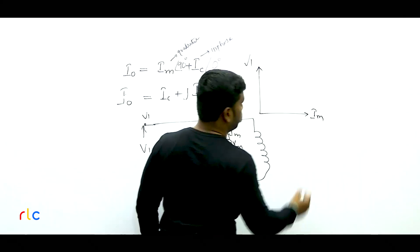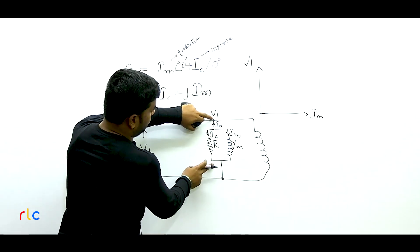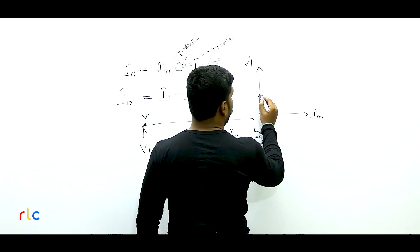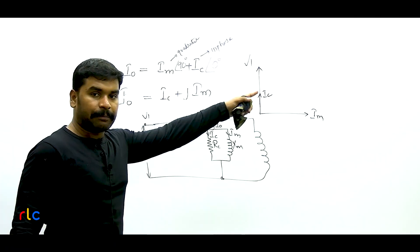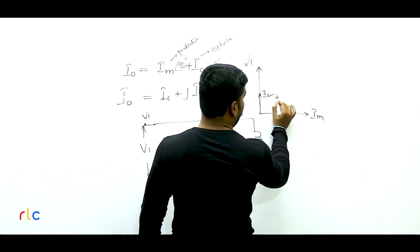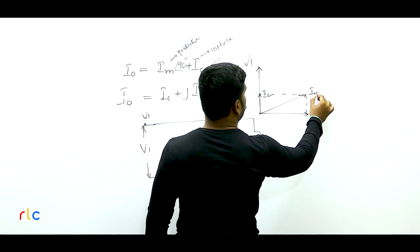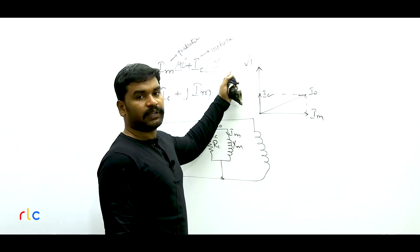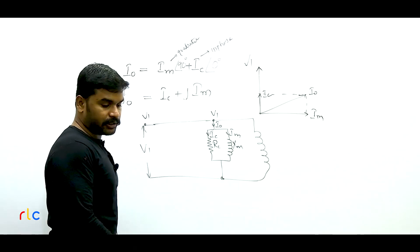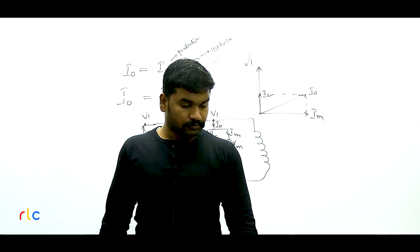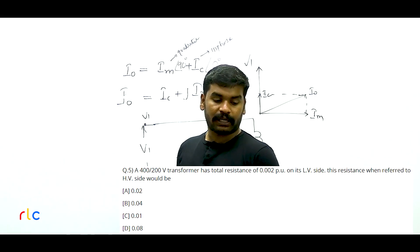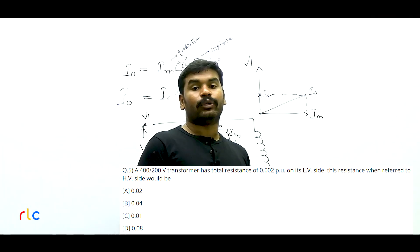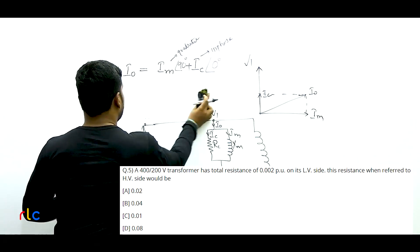Per unit impedance is defined as Z_pu = Z_actual / Z_base, so Z_actual = Z_pu × Z_base. Important note: R_pu = Ra / Zb (divide by Z base, not R base — R base does not exist for impedance elements). Therefore: R_actual = R_pu × Zb = 0.02 × 40 = 0.8 ohms. X_actual = X_pu × Zb = 0.04 × 40 = 1.6 ohms. So the HV side ohmic impedance = 0.8 + j1.6 ohms. Option A is the right answer.